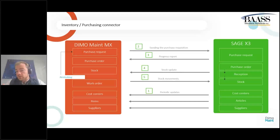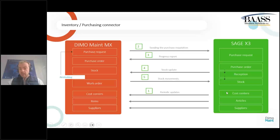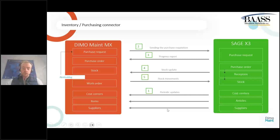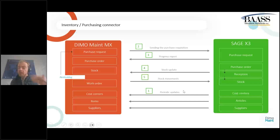The integration with Sage X3 is pretty straightforward. Sage X3 holds the master data and will first update Dimo MX with cost centers, articles, and suppliers. As the maintenance person, I can see all that information within the software — all the suppliers, the parts they sell, contractors and how much they cost — without having to go find it in X3.